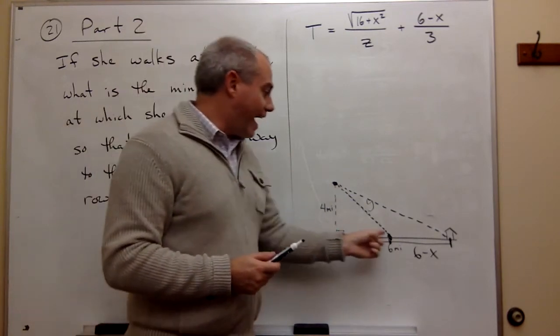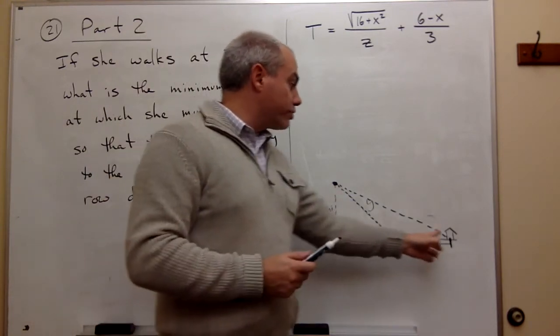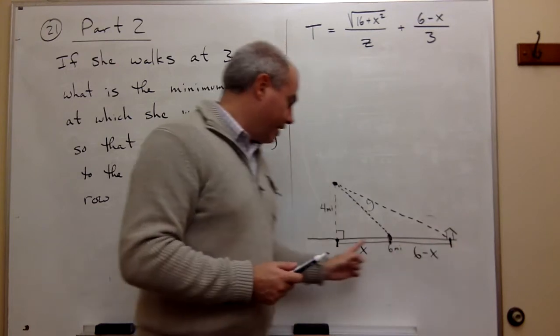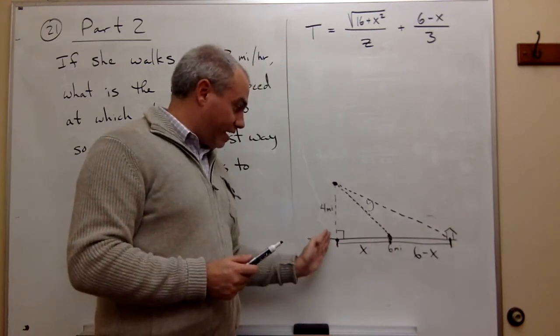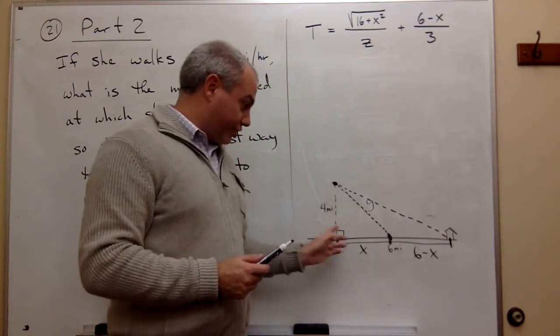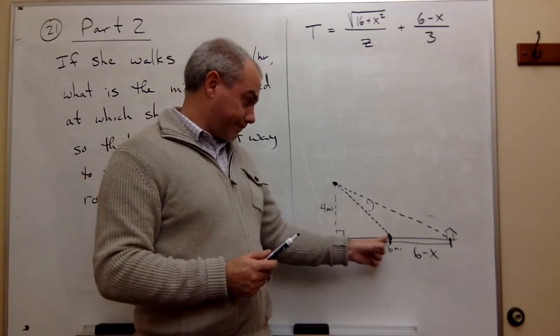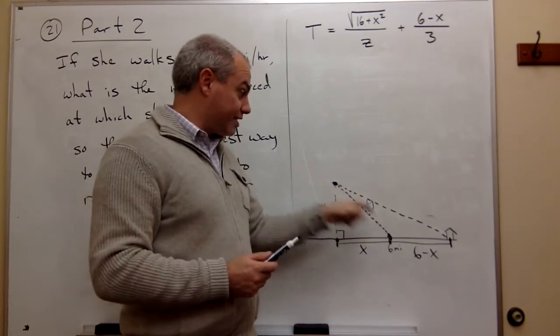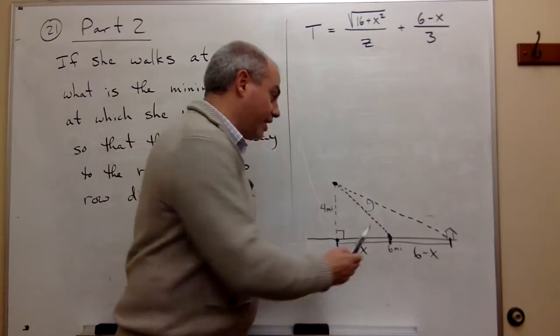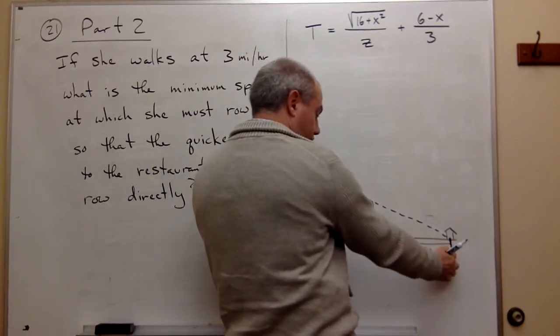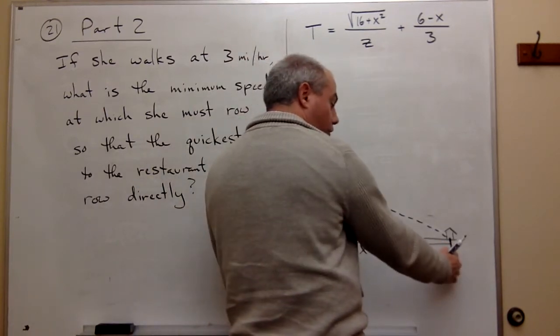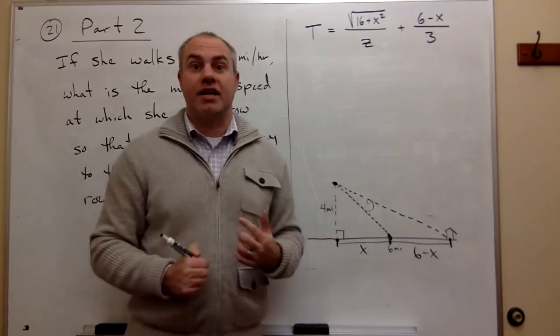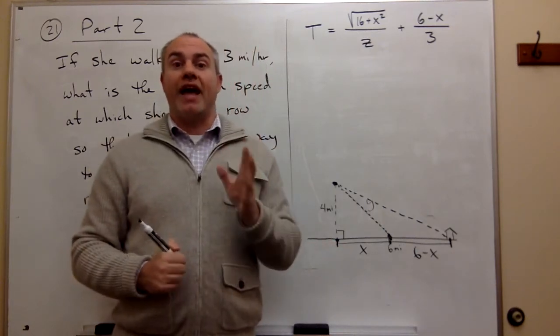And that is, we know what the value of x should be. The value of x, if she rowed all the way to the restaurant—then x is the amount of shore that she decides to skip before she lands the boat. This is x. If she rowed all the way to the restaurant, then x is this full distance, and x is six.